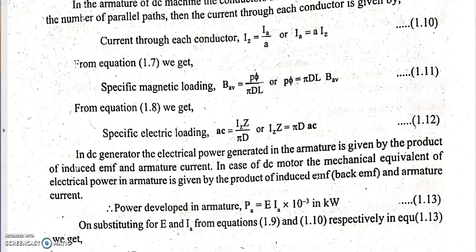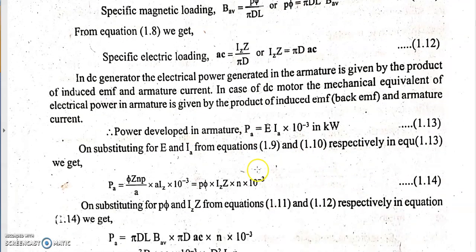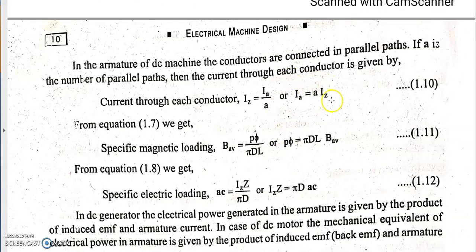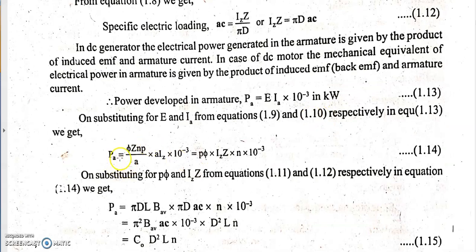We now derive the power developed in the armature of a DC machine. Power developed equals induced EMF × armature current, that is E × Ia × 10⁻³ to convert to kilowatts. Substituting the EMF equation φZnP/A for E and A × Iz for Ia, we get the power equation as φZnP/A × A × Iz × 10⁻³. The A terms in numerator and denominator cancel, leaving an expression separating total magnetic loading and total electric loading.